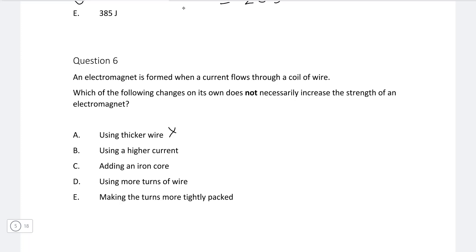Using a higher current, yep, absolutely this does change it. Adding an iron coil, this absolutely does help link the magnetic fluxes. Using more turns of a wire, this absolutely has a major effect. Making turns more tightly packed, that is absolutely true as well. So the thickness of the wire does not increase the strength of the electromagnet.